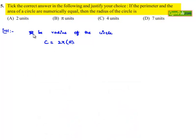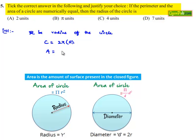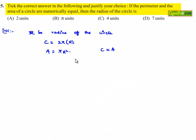And the area of the circle A is equal to πr². But it is given that circumference is equal to area, which implies 2πr is equal to πr².